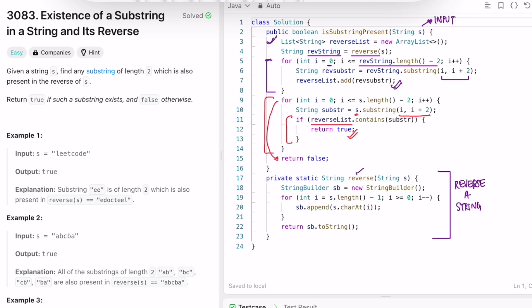After you come out of the for loop, if you haven't returned true, you will return false. The time complexity of this approach is O(n) and the space complexity is also O(n) because you're using a list to store the substrings on the reverse string. That's it guys, thank you for watching and I'll see you in the next video.